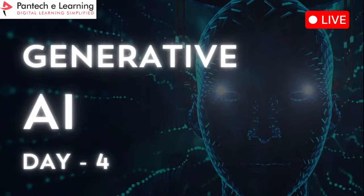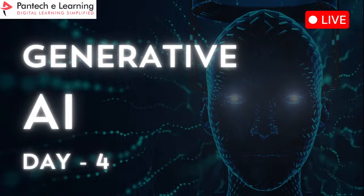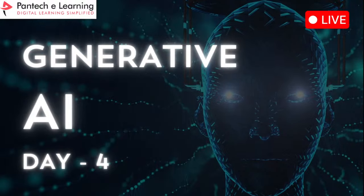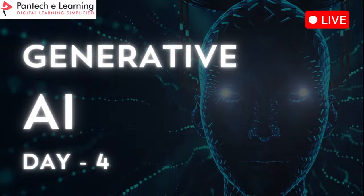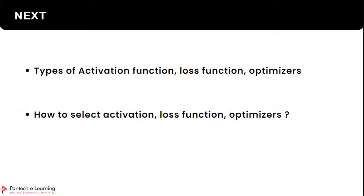In this session, we haven't yet seen different types of activation functions, different loss functions, and different optimizers. So we will see some glimpse of those and then move into Day 4, which is going to be a hands-on session on building a basic neural network with PyTorch. We are going to discuss activation functions, loss functions, and optimizers, and how and when to choose which one.